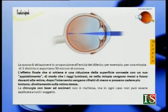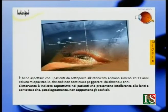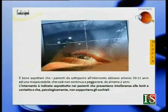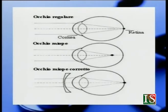La chirurgia con il laser a eccimeri non è rischiosa ma non può essere applicata in tutti i soggetti. È bene aspettare che i soggetti abbiano almeno 20-21 anni di età, cioè che la miopia si sia stabilizzata e non continui a peggiorare da almeno due anni. L'intervento è indicato soprattutto nei pazienti che presentano intolleranza alle lenti a contatto o che psicologicamente non sopportano gli occhiali. Quando c'è la correzione con le lenti, il fuoco va esattamente sulla retina correggendo il difetto visivo completamente.